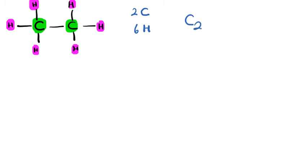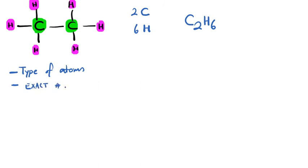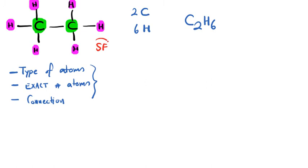So I may write a formula like C₂H₆ — two carbon atoms, six hydrogen atoms. In this formula I find type of elements, the exact number of atoms, and also the connection between atoms. Each carbon atom is connected to three hydrogens. This information regarding molecular shape and connectivity means we call this a structural formula, or Lewis structure.